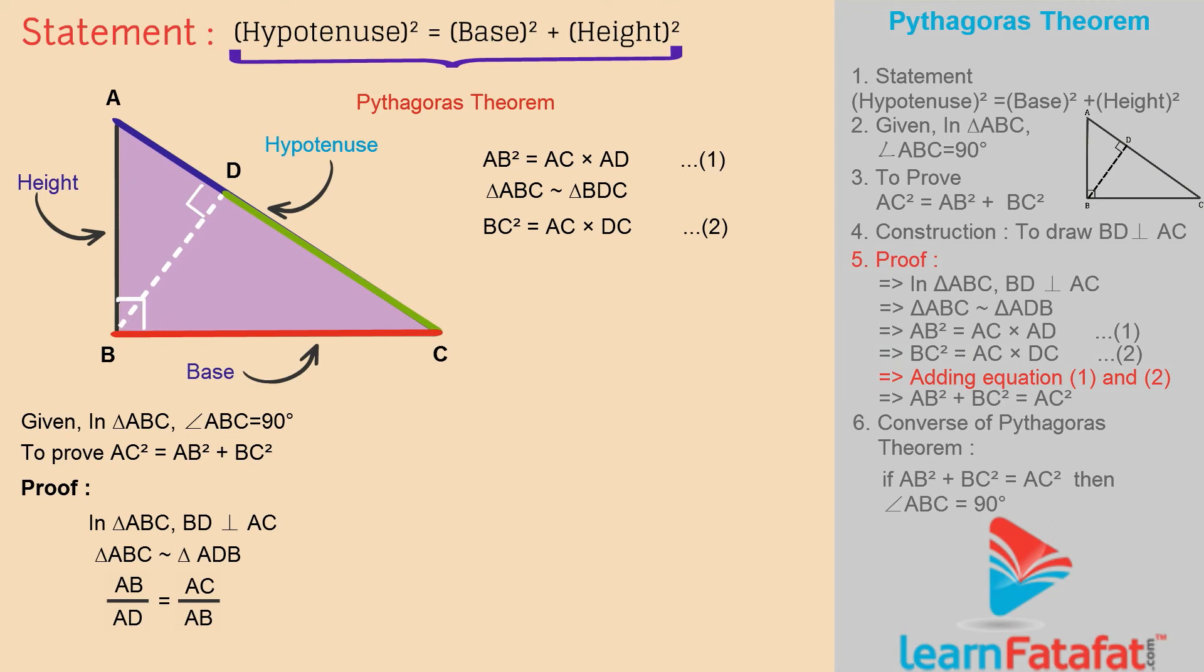Adding equations 1 and 2, we get AB² plus BC² equals AC times AD plus AC times DC, which equals AC times (AD plus DC). But AD plus DC equals AC.